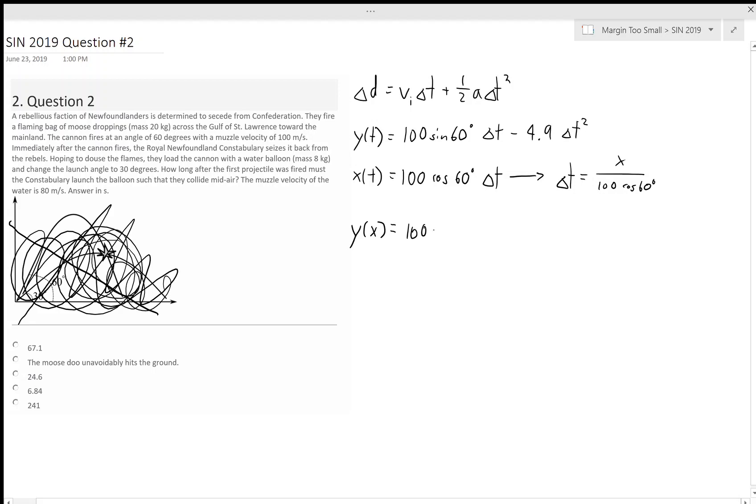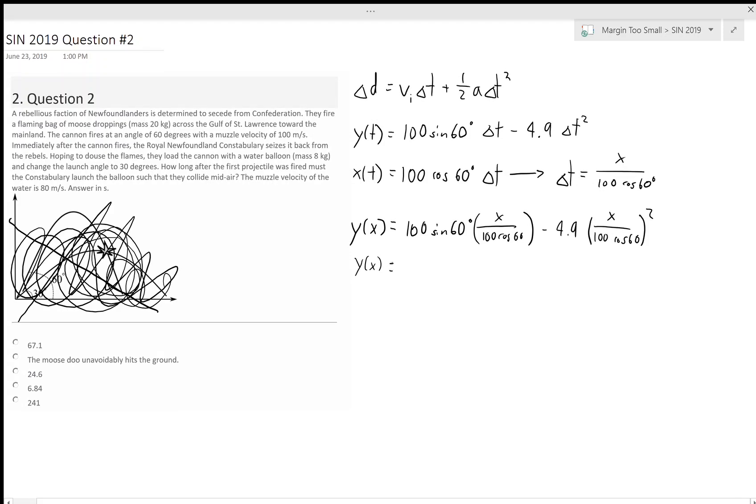We can make this substitution. We have 100 sine 60 as before, but instead of writing t, we write x divided by 100 cosine 60, and then minus 4.9. Instead of writing t squared, we write x over 100 cosine 60 squared. If we simplify this, we get y of x equals 1.7x minus 0.002x squared. That's all for the moose droppings.